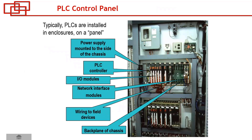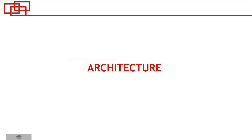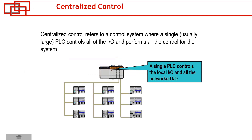Here is an example of a control panel where all the devices are connected — this includes network interface modules, field wiring, backplane, power supply, PLC controller, and IO modules. This is the main installation location for all the required PLC components.